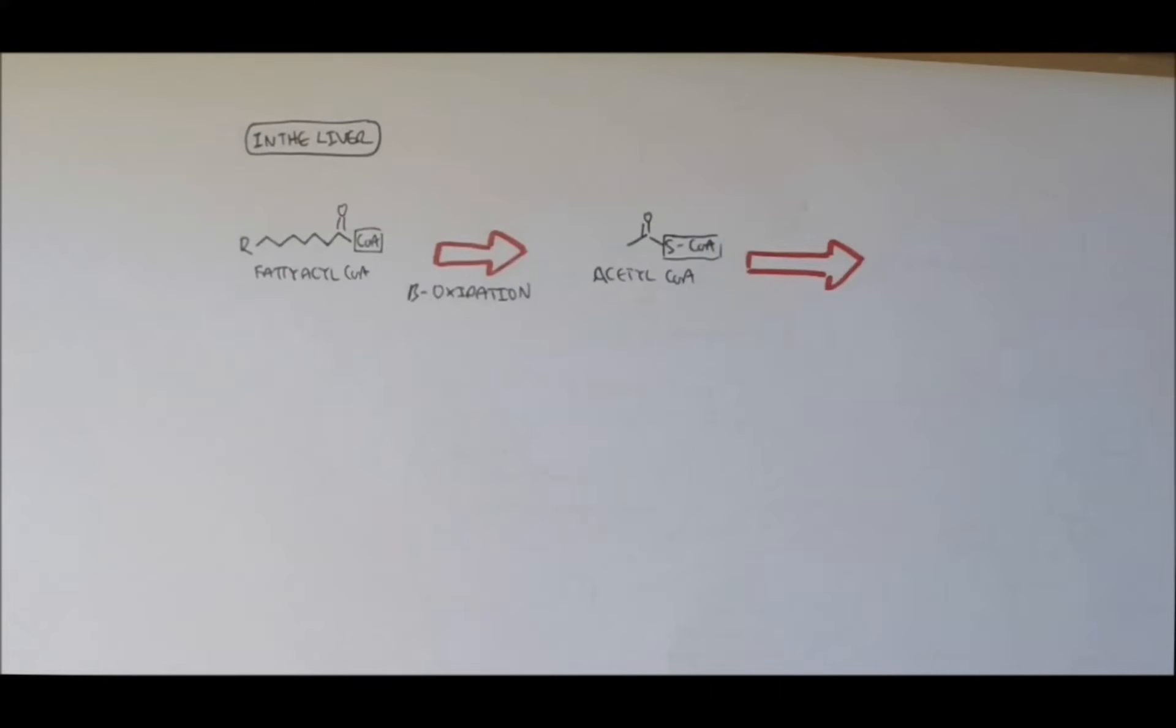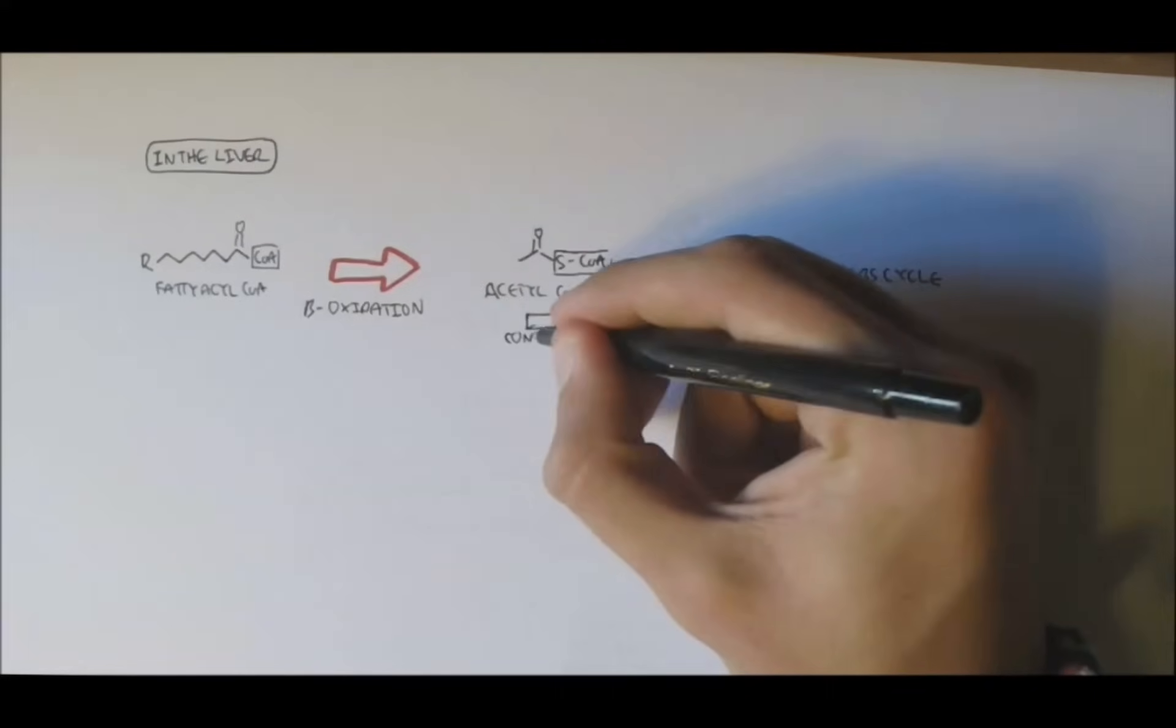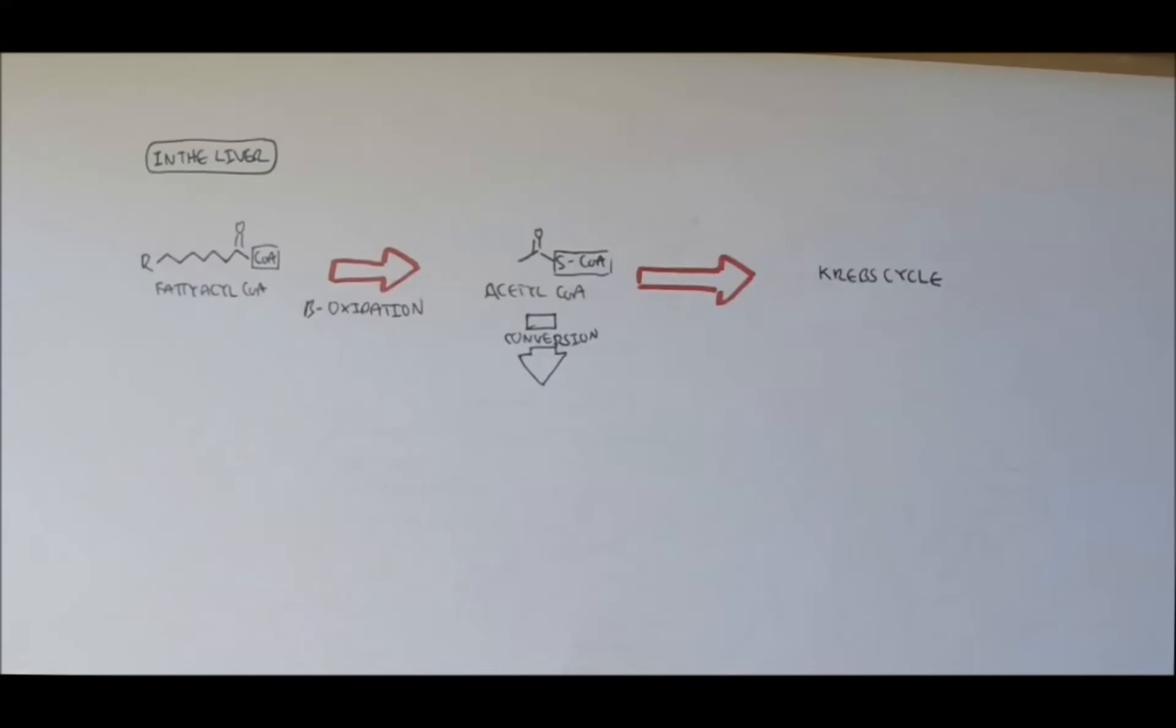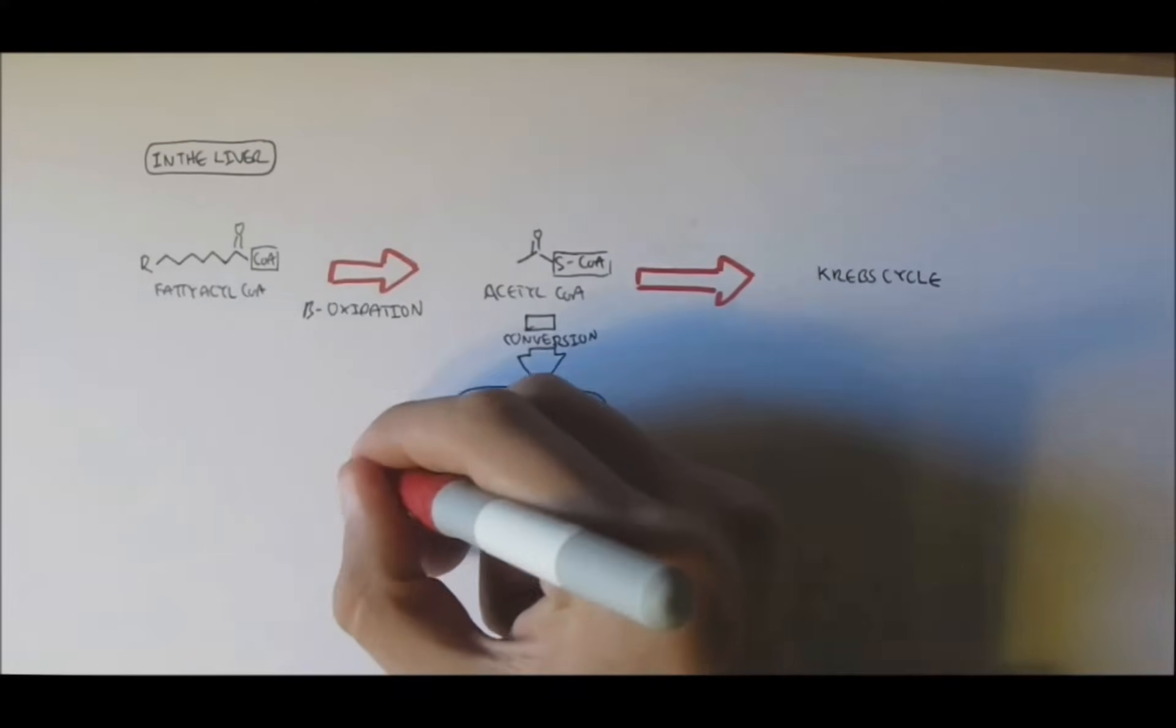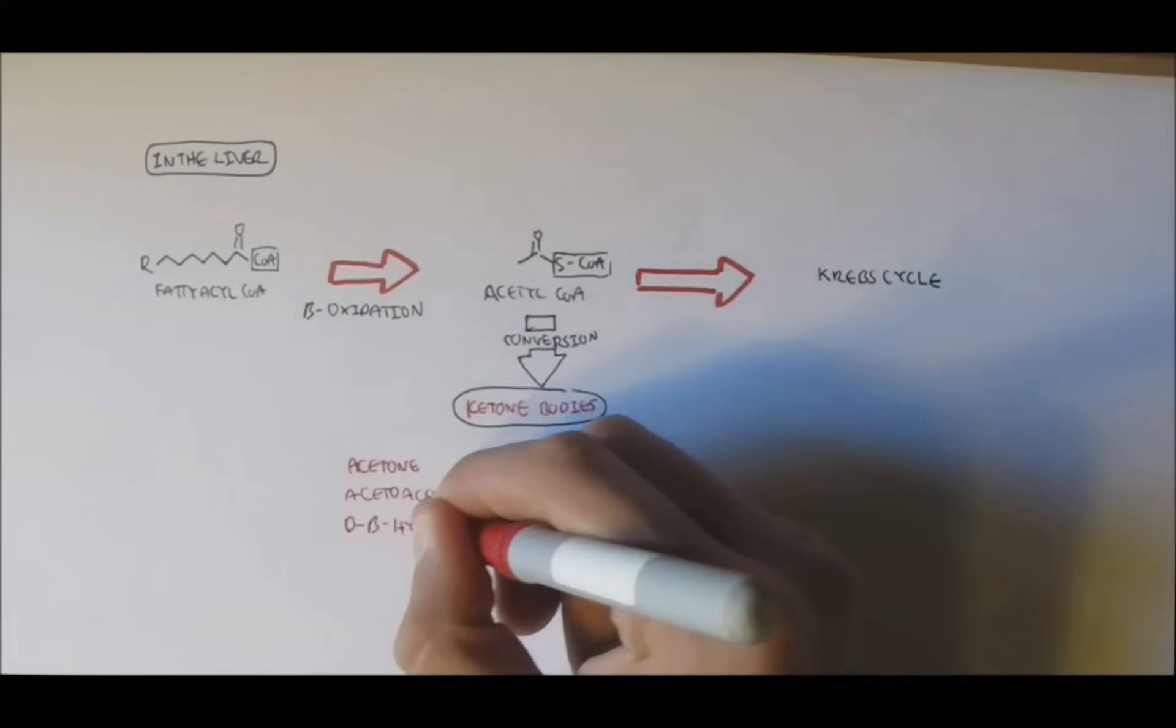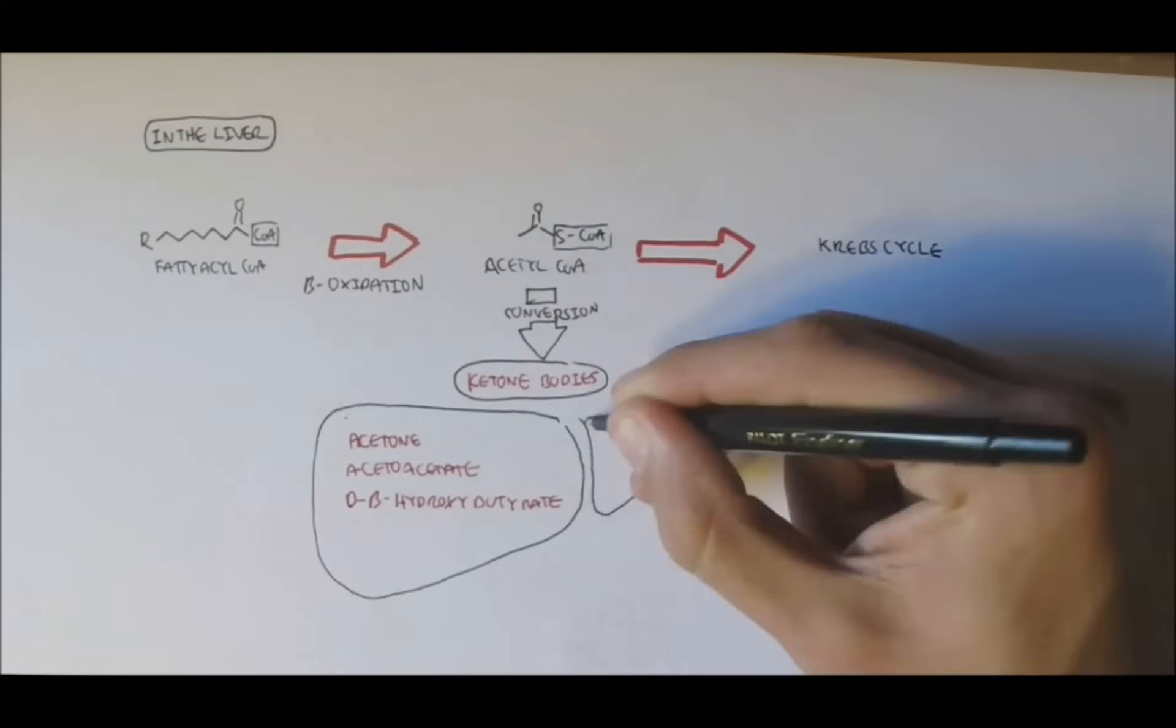The acetyl-CoAs can enter the Krebs cycle to produce more ATP. Or, alternatively, it can be converted to ketone bodies. Now ketone bodies include acetone, acetoacetate, and D-beta-hydroxybutyrate. Remember, we are still in the liver.